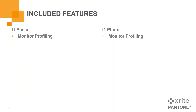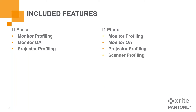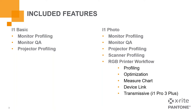This includes monitor profiling, monitor QA — which is a quality assurance test as well as a monitor uniformity test — projector profiling, scanner profiling, and finally RGB printer workflow. The RGB printer workflow includes features such as profiling, optimization, measure chart, device link, and finally transmissive profiling for i1 Pro 3 Plus users.